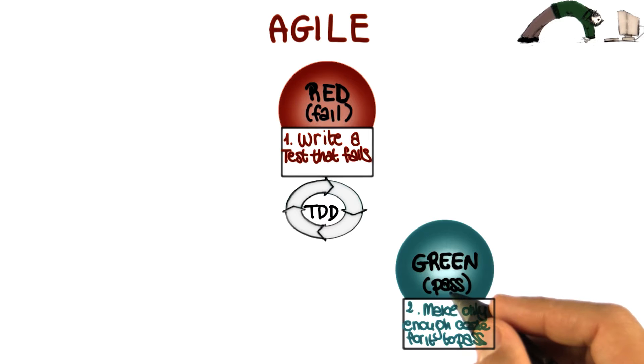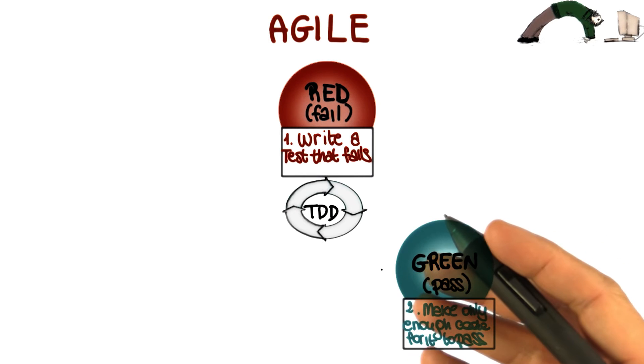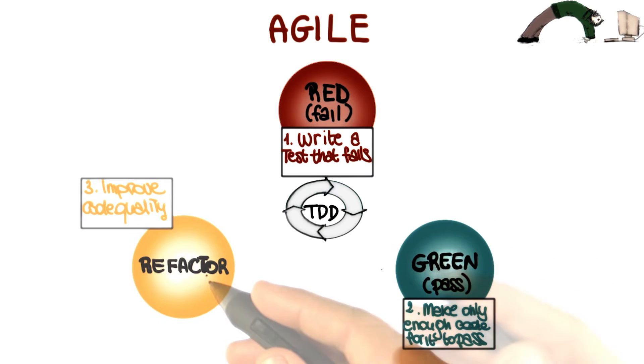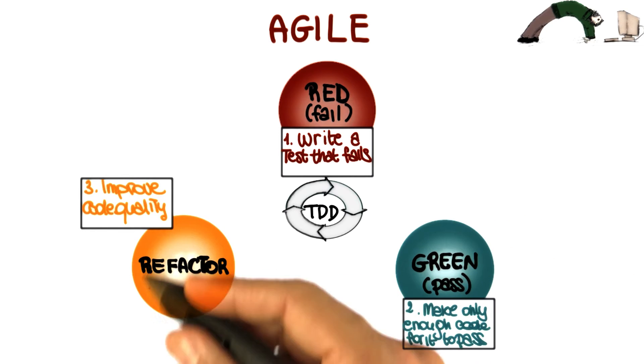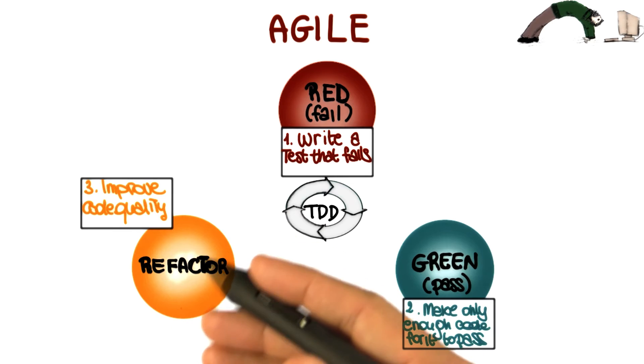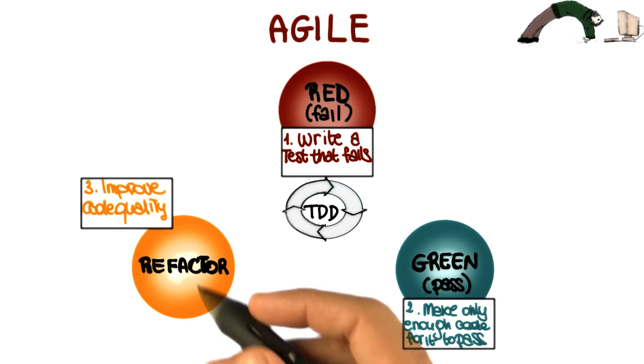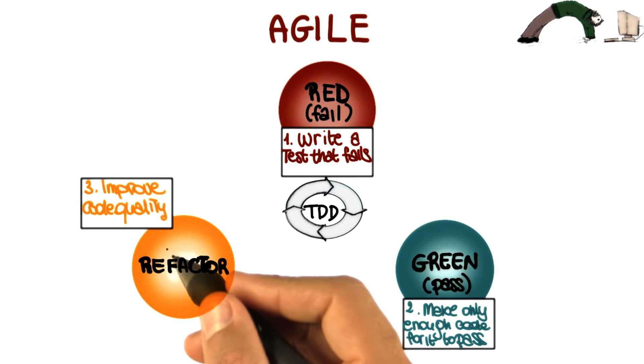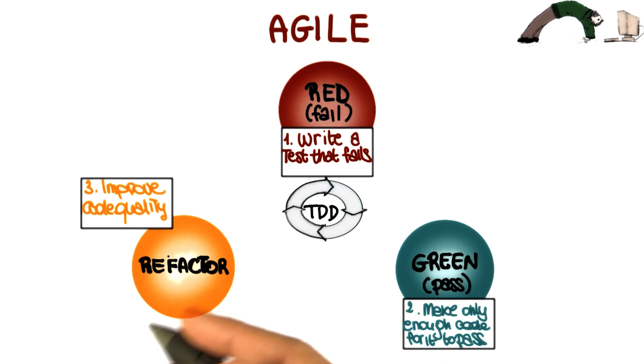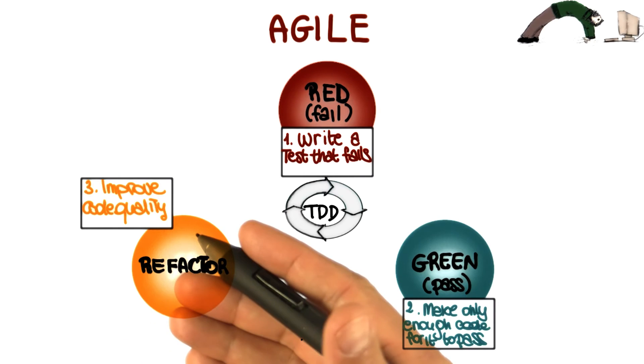When we do this over time, though, what happens is that the structure of the code deteriorates because we keep adding pieces. So that's why we have this step, which is refactoring. In this step, we modify the code, and we will talk about refactoring extensively. We'll devote one lesson to it. We modify the code to make it more readable, more maintainable. In general, we modify it to improve the design of the code.